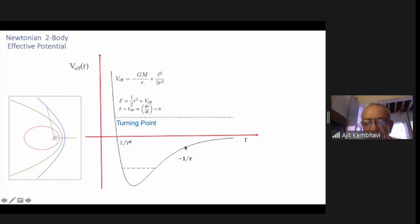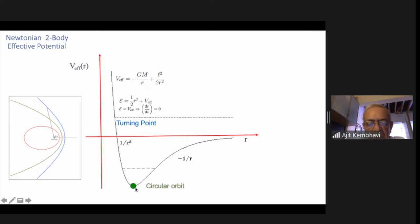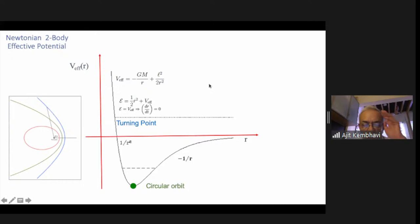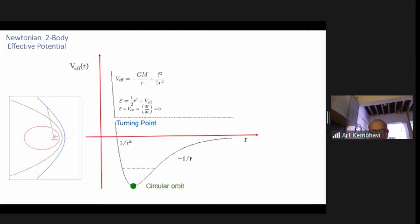The net effect is that if you have zero angular momentum and throw a particle toward r equals zero, it will fall in. But if you have the smallest amount of angular momentum, the particle will always bounce back because eventually the centrifugal force dominates the gravitational force. Please understand that all this is within Newtonian theory.